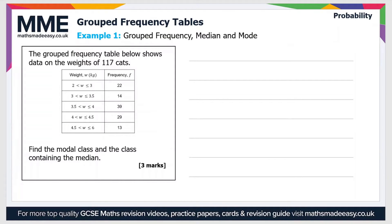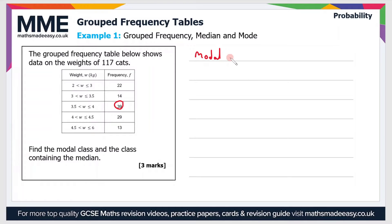So let's have a look at an example question. The grouped frequency table below shows data on the weight of 117 cats. Find the modal class and the class containing the median. Well, the modal class is just the most common class — the one with the highest frequency. The highest frequency is 39, so the modal class is 3.5 to 4 kilograms.